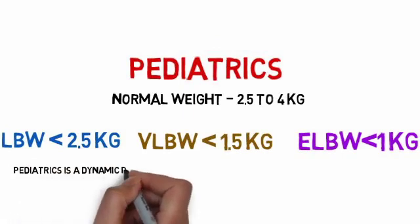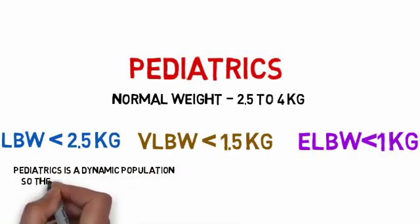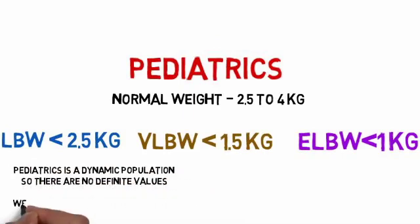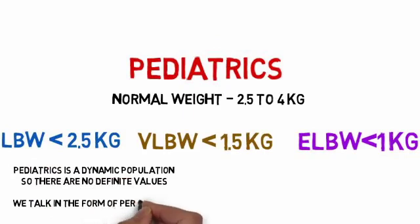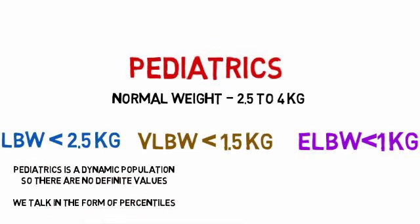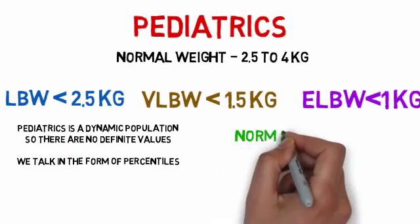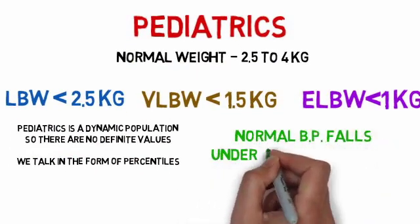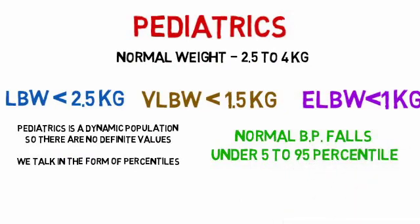Pediatrics is a dynamic population so there are no definite values. We talk in the form of percentiles. For example, normal BP falls under 5 to 95 percentile.